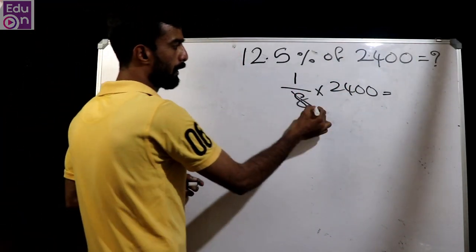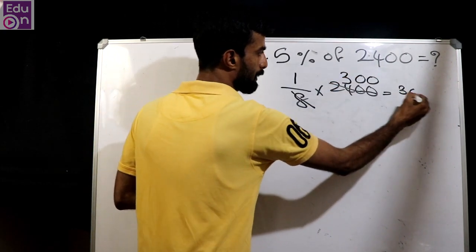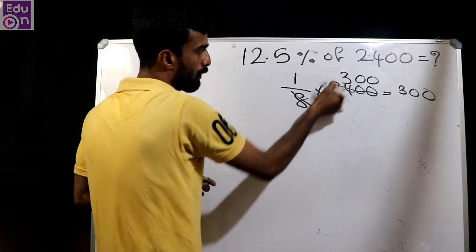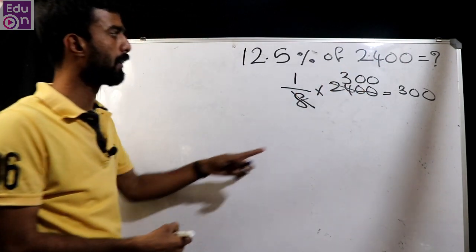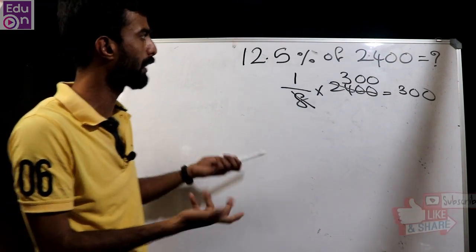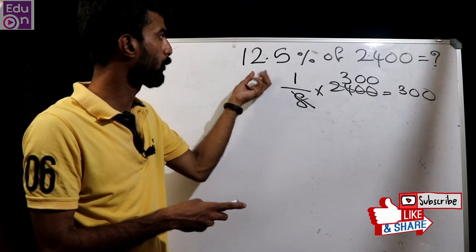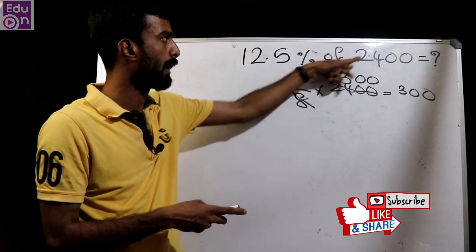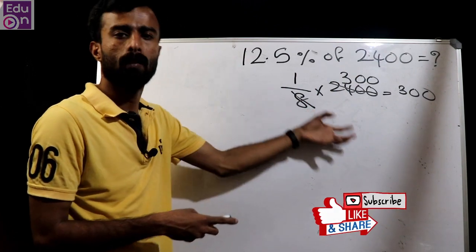How many times? 3 by 4. 300 and 3 by 4. This is not easy to answer the question directly. We will answer the question using 1 by 8.